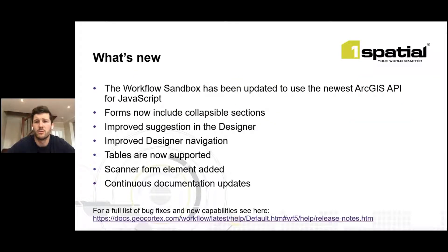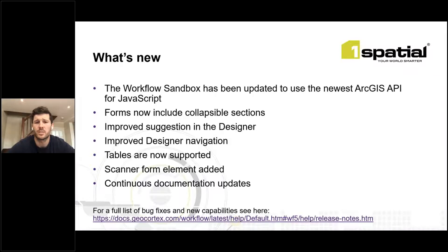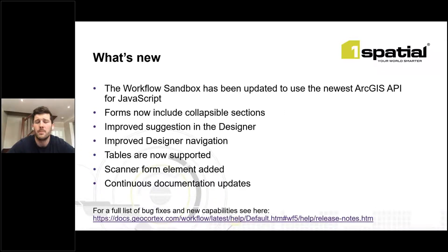In the last year there have been a number of new releases of Geocortex Workflow. The sandbox used to test workflows in development has been updated to use the newest ArcGIS API for JavaScript version 4.13. Forms now include collapsible sections, there are improved suggestions in the designer, and the designer now shows the activity ID in the breadcrumb and includes an activity description in the navigator. Tables are now supported, and a scanner form element allows users to scan barcodes and QR codes in the Geocortex Viewer for HTML5 and Web App Builder.